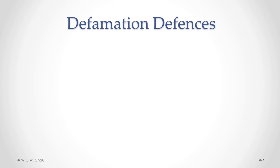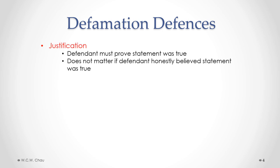The first defense is called justification, where the defendant proves that the statement they made was true. It doesn't matter how damaging the statement is to the plaintiff's reputation — as long as the defendant can prove it's true, the defendant won't be held liable. The plaintiff does not have any obligation to prove the statement was untrue. They just need to start the lawsuit and allege defamation. It's the defendant who has the burden to prove the statement was true.